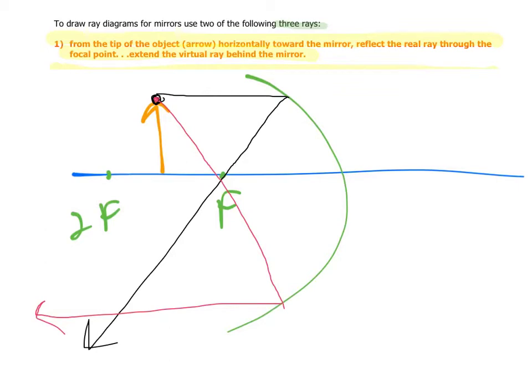Wherever the two lines cross right here will be where your image is and then you could draw your arrow going downward. You notice in this case the arrow is magnified a little bit. It's a little bit bigger than the orange one. It's also inverted. That means it's upside down instead of right side up.